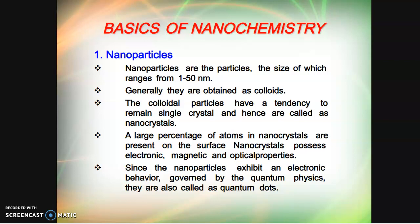Nanoparticles are particles the size of which ranges from 1 to 50 nanometers, and they are obtained as colloids in general. These colloids have the tendency to remain a single crystal and hence are called nanocrystals. A large percentage of atoms in nanocrystals are present on the surface and possess electronic, magnetic, and optical properties. Since they exhibit electronic behavior governed by quantum physics, they are also called quantum dots.